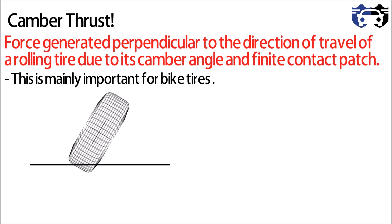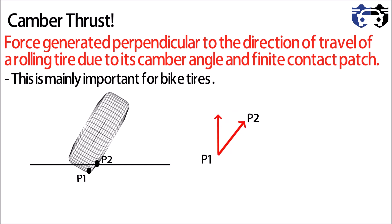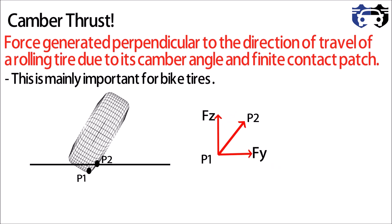This is a tire with some camber angle. As the tire rolls on the road it gets deformed and becomes flat at the bottom. Due to this deformation, point P1 on the tread moves to position P2, and a force is generated due to tension in the tread in that direction. Resolving it into components gives the perpendicular force Fz and the lateral force Fy — this is how lateral force is generated due to camber.